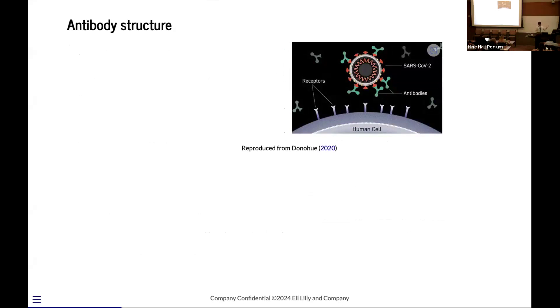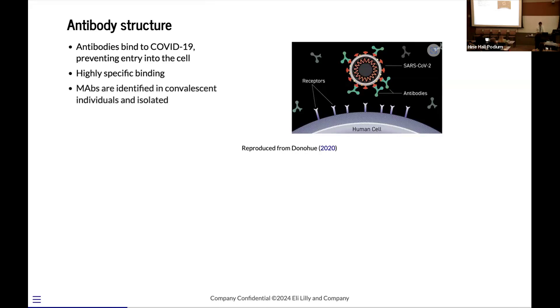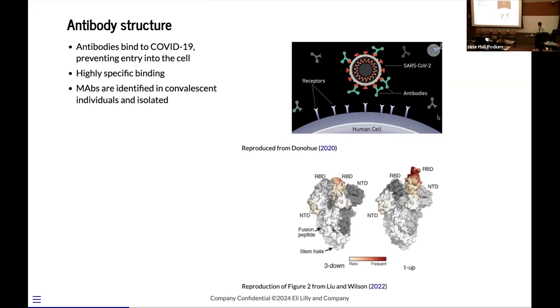Antibodies are going to bind to the spike protein of the COVID virus here. And so, by binding to the spike protein of the virus, it prevents the virus from connecting to cells, receptors on the cells, and depositing the viral DNA within it. Monoclonal antibodies tend to have highly specific binding, and we identify them typically by isolating antibodies within convalescent individuals who have had immune system responses to them, and then isolating ones.